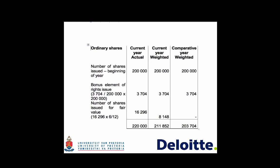The first column is the current year actual number of shares, which will be used in the calculation of dividends per share. The second column is the current year weighted average, used in the calculation of earnings per share. The third column is the comparative period weighted average, used for the comparative period earnings per share.